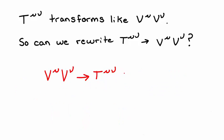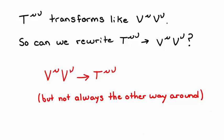Another way to think about this is as follows. Any two vectors, v mu and v nu, can be represented instead as a symmetric two-index tensor, or t mu nu. However, we can't always go the other way. Not every two-index tensor can be represented as two one-index tensors.